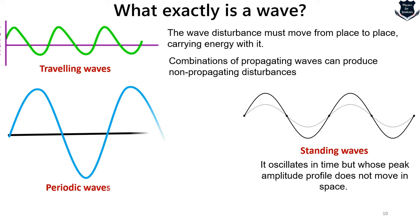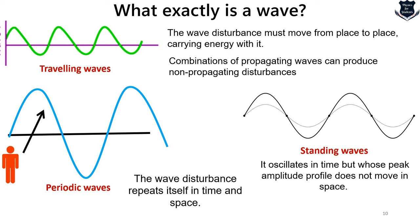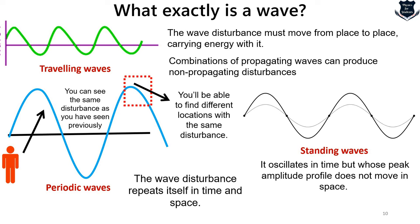A periodic wave is one where the wave disturbance repeats itself in time and space. If you are standing at one location and wait long enough, you will see the same disturbance as before. And if you take an instantaneous snapshot, you would be able to find different locations with the same disturbance. Combinations of periodic waves can add up into non-periodic disturbances such as a wave pulse, which we will cover later.